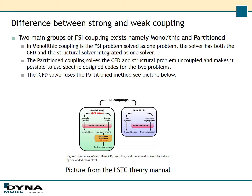There exist two main groups of FSI couplings: monolithic and partitioned. In a monolithic problem, the whole problem is solved together, meaning you have one big matrix that includes both the structural and the fluid problem, requiring a solver with both capabilities. In the partitioned approach, you have one solver for each field — the fluid problem has one solver and the structural problem has another — and they are solved separately and then coupled together.